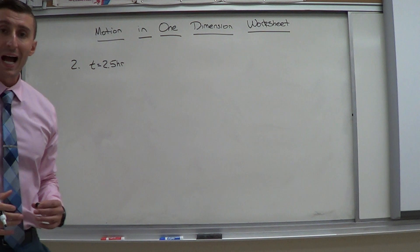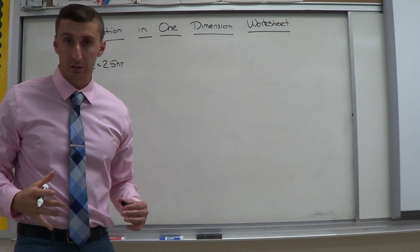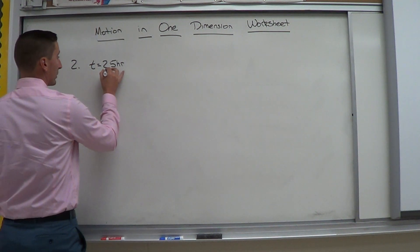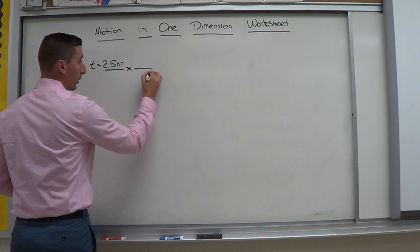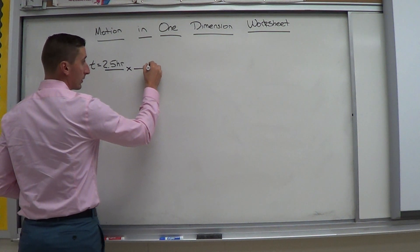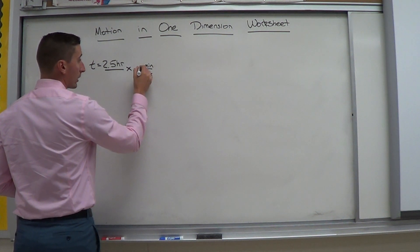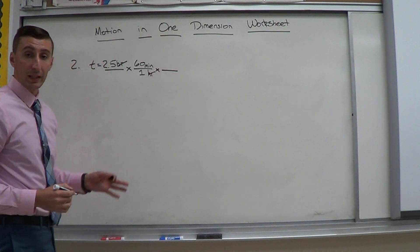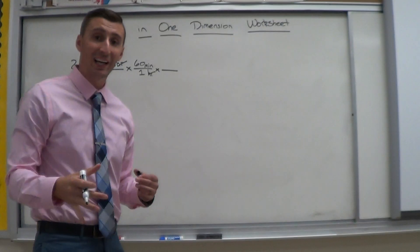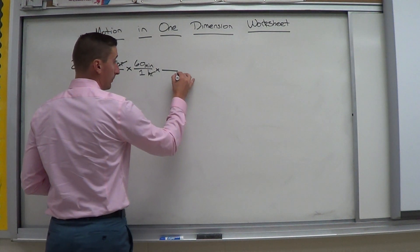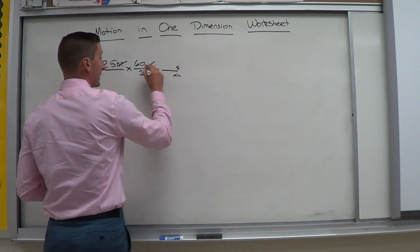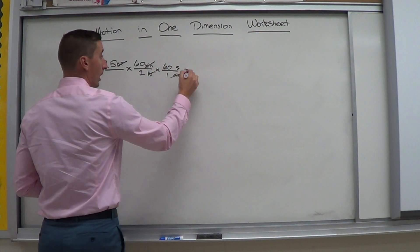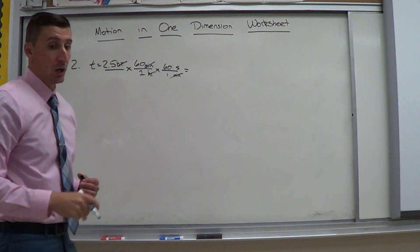Well, if you notice, hours is not our base units. So again, we need to convert that to use it. So I want to get rid of hours. So I put it on the bottom. I'll go to minutes. I know 1 hour is equal to 60 minutes. Hours cancel out. I want to get rid of minutes. Remember, my base unit for time is seconds. So minutes go on the bottom. Seconds go on top. Minutes cancel out. I know 1 minute is equal to 60 seconds. I'm good. I got seconds here.